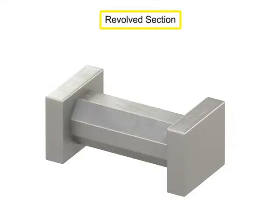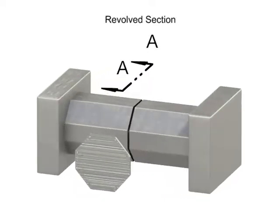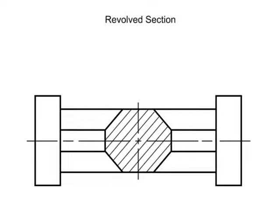A revolved section is created when the cutting plane slices through the feature, but the cut shape is rotated 90 degrees and shown directly on the regular view. Sometimes the new section is shown without brakes, and sometimes it is shown with brakes.